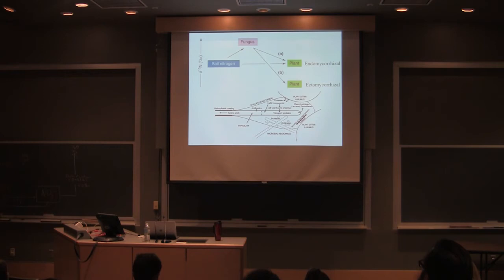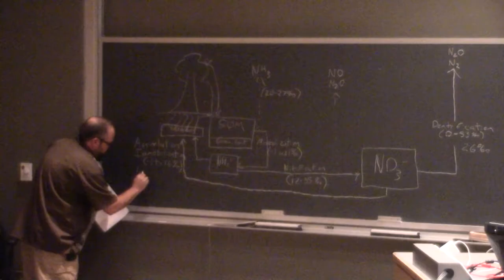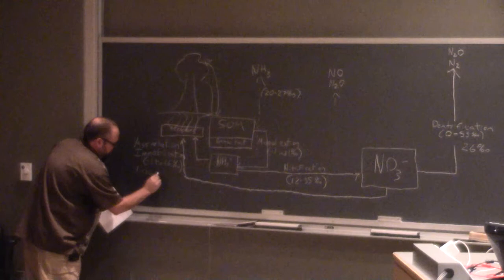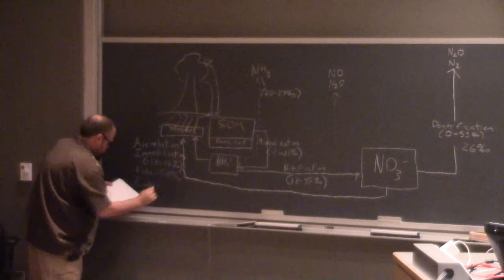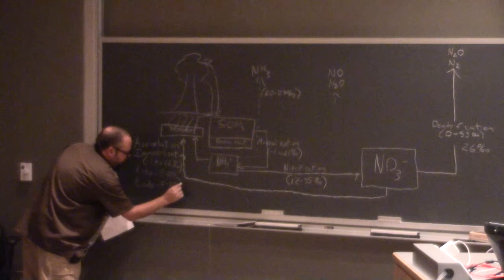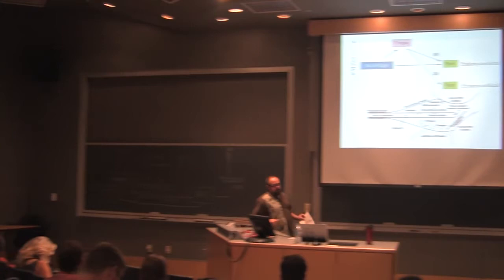We're going to want to add this, because even though our assimilation process is only a fractionation of a couple of per mil, if it's ectomycorrhizal it's bigger — it can be as big as 8 to 10 per mil. Endo is about 0 to 3.5 per mil. So it's a big effect.